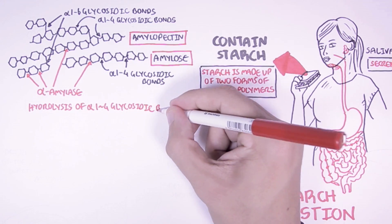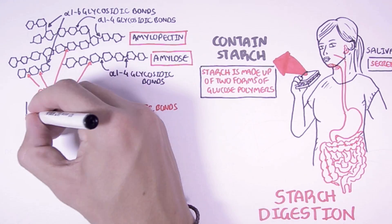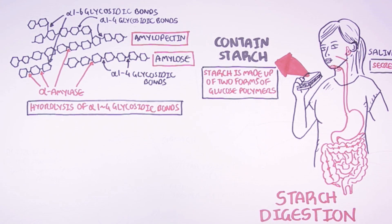So alpha-amylase hydrolyzes alpha-1,2,4 glycosidic bonds. Hydrolyzing in this respect means breaking down.